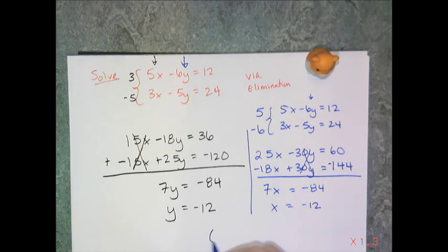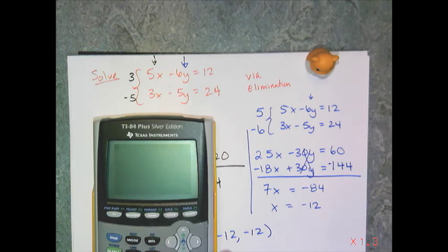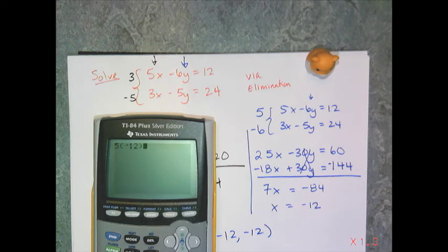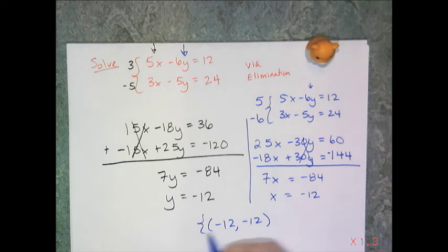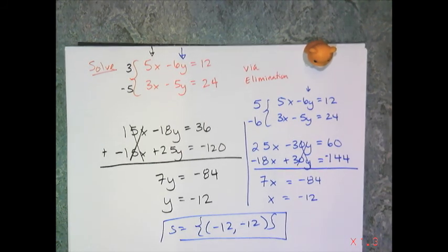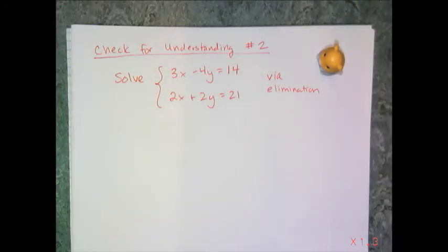I want to double-check that my solution is (negative 12, negative 12). I take the original equations and plug in negative 12 for both variables. So 5 times negative 12 minus 6 times negative 12 — that should equal 12, and it does. So this answer has been checked and verified. Now it's your turn: solve the system 3x minus 4y equals 14 and 2x plus 2y equals 21 by elimination.